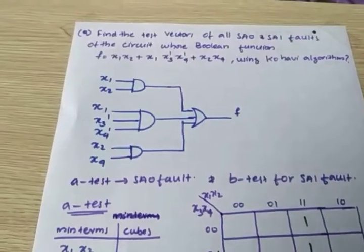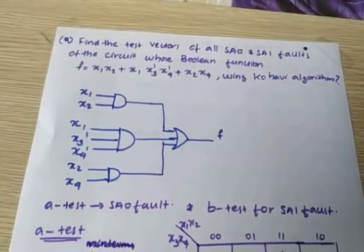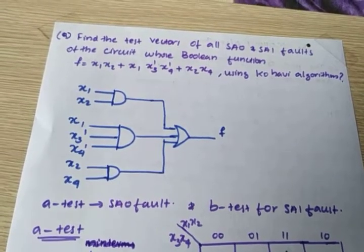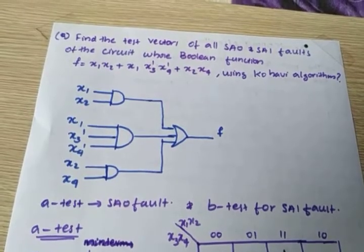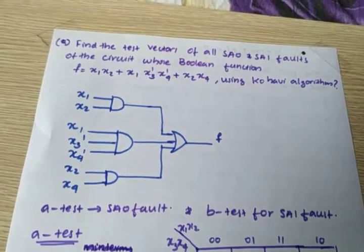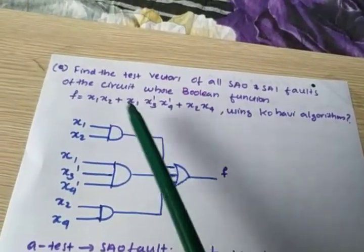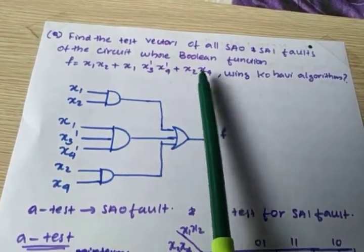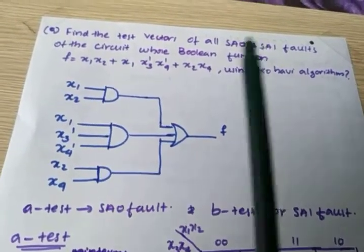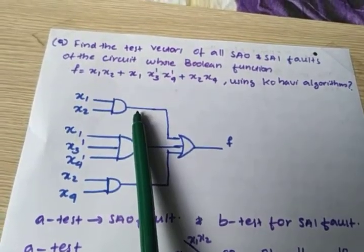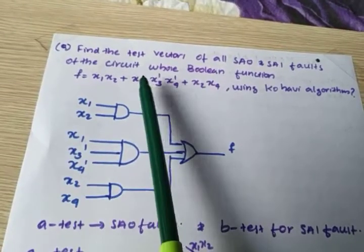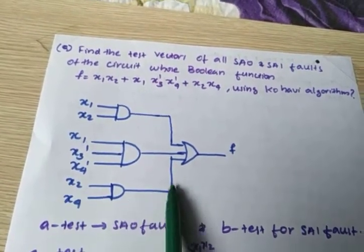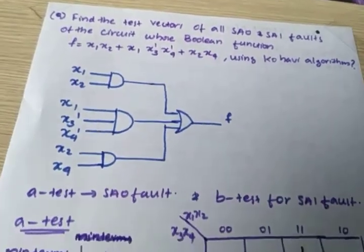We will clarify all these concepts by doing a problem. The question is: find the test vector for all stuck-at-zero and stuck-at-one faults of the circuit where the boolean function f(x) = x1·x2 + x1·x3'·x4' + x2·x4, using Kohavi's algorithm. First, you have to draw the circuit. x1 and x2 are given to an AND gate, then to an OR gate. Another 3-input AND gate takes x1, x3', and x4'. Then x2 and x4 go to another AND gate, and all outputs go to the OR gate.